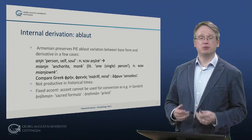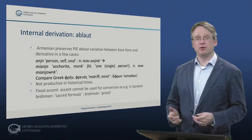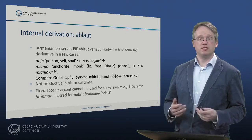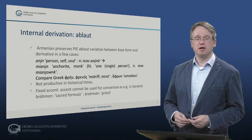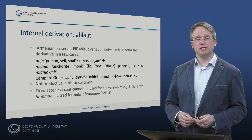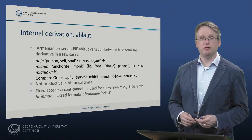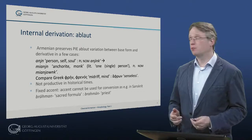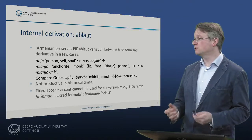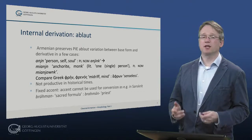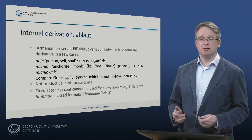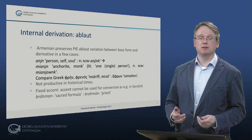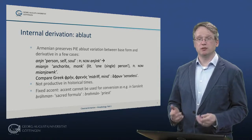Internal derivation is the process of deriving one word from another without pre- or suffix, but by a word-internal change. Armenian preserves Indo-European ablaut variation between base form and derivative in cases such as an-sen – person, self, soul – and in the plural an-sink, and then we have a derivative mi-ansen – an anchorite, literally a single person, and the plural is mi-ansunk.